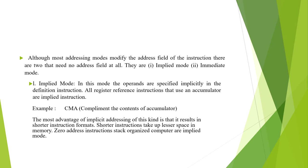Most Addressing Modes notify the address field of the instruction, but there are two that need no address field at all — they are Implied Mode and Immediate Mode. In Implied Mode, the operands are specified implicitly in the definition of the instruction. All register reference instructions that use an accumulator are implied instructions. Example: CMA.